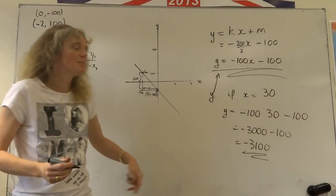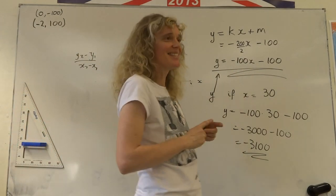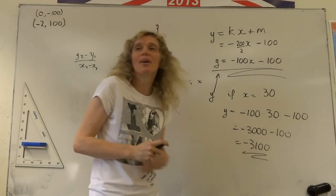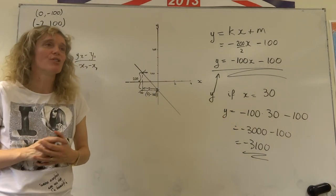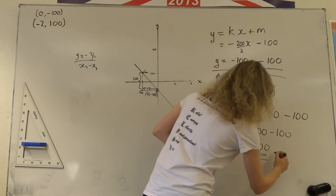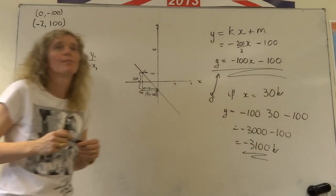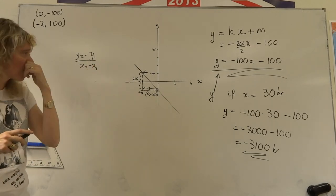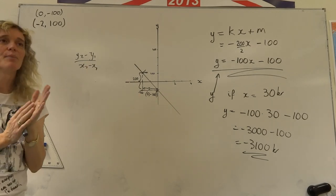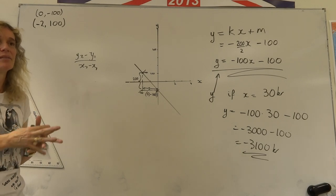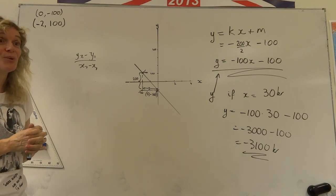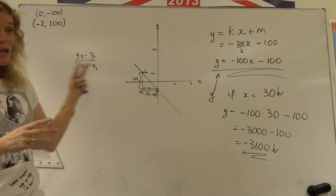Minus 100 times 30 equals minus 3000 minus 100 equals minus 3100. This kid is borrowing lots of money from his parents, he's going in debt. So he's owing them minus 3100 kronus. This was a graph representing how much debt he was getting himself into. Equations of lines.